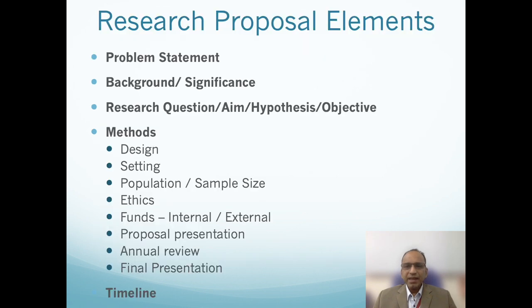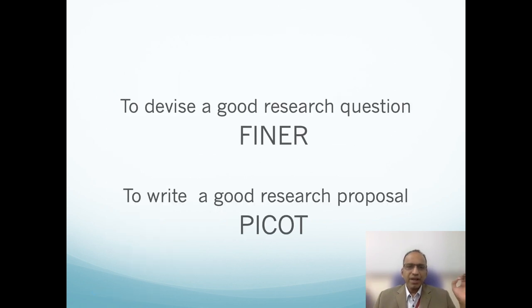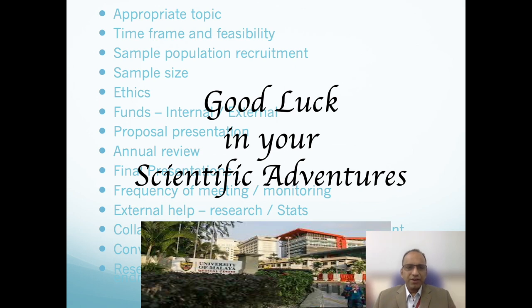To summarize: I've explained what a research question is, what a research hypothesis is, and how the research question leads to the hypothesis and finally to the objective. Once you have done this, you can move to the next step, which is the methodology — covered in subsequent lectures. To devise a good research question, use the FINER criteria: feasibility, interesting, novelty, ethics, relevance. To write a good research proposal, you will also use the PICO criteria, which will be explained in upcoming lectures. Thank you — I will be available for question and answer following this lecture.